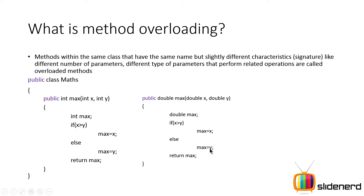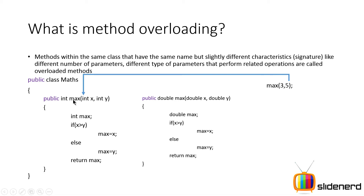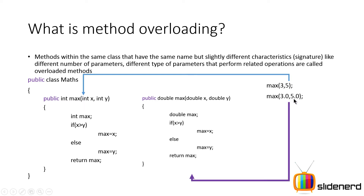These are called overloaded methods. Max is an overloaded method with two versions: one for comparing integers and one for comparing doubles. When you call max(3, 5), the compiler sees both methods with the same name and picks the one matching integer types. When you call max(3.0, 5.0), the compiler identifies 3.0 and 5.0 as doubles and calls the double version.